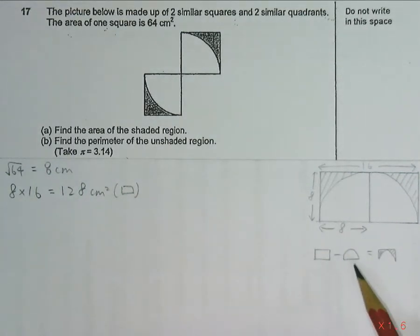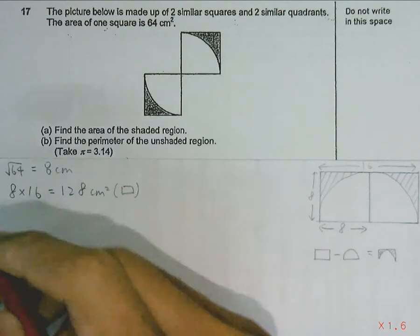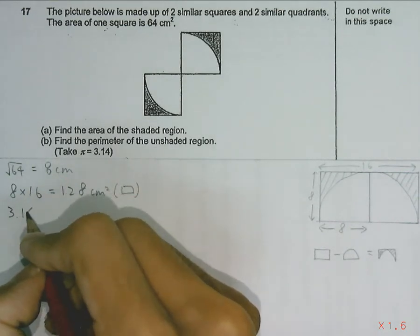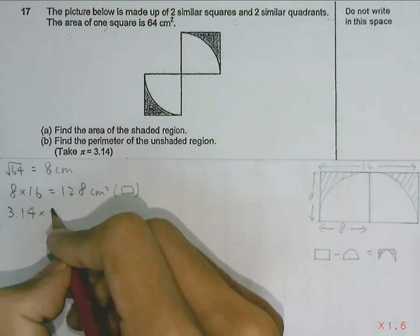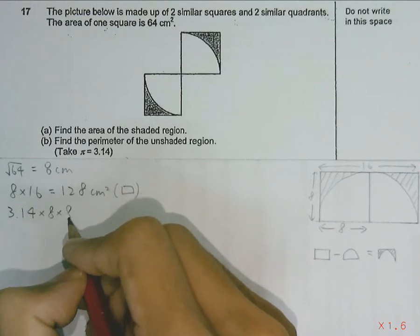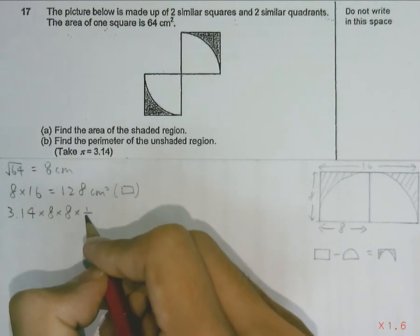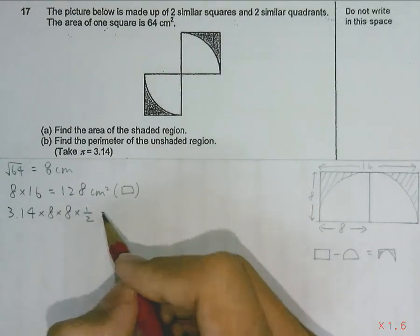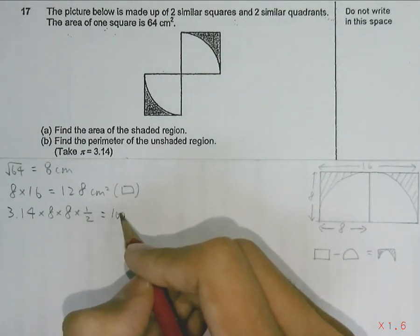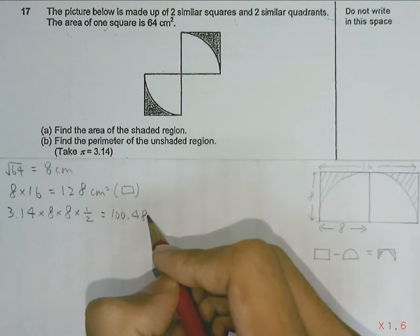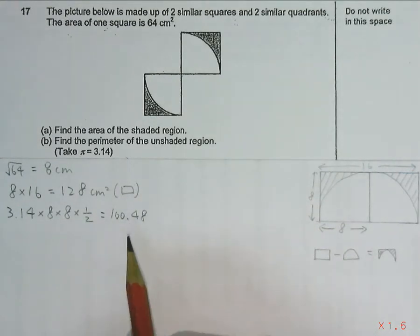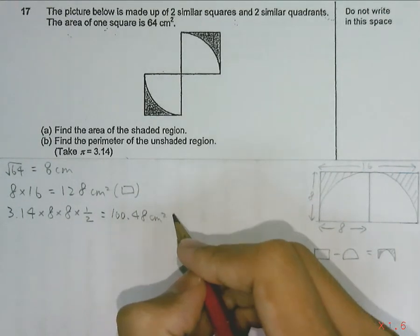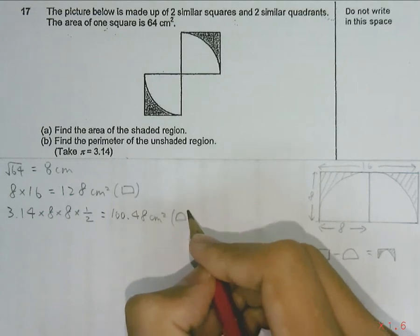The area of the semicircle can be found by π times the radius times the radius times half, because it is a semicircle. And this will give us 100.48 cm². This will be the area of the semicircle.